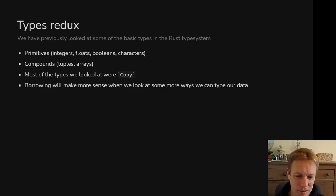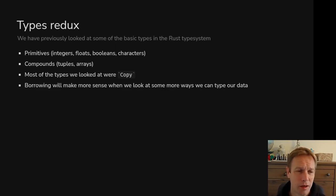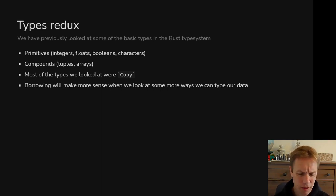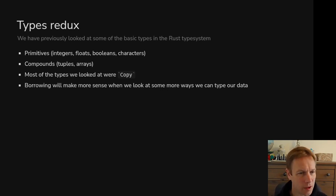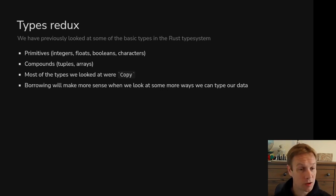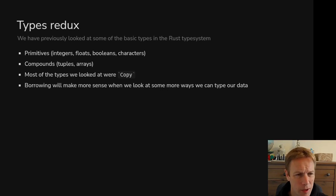We looked at how to give out references last time. This time we're going to talk about how you make your own types. Hopefully borrowing will make more sense when we can see that we often make types that are not copy, and therefore you don't want to just pass a copy into a function because it's too big or complicated.